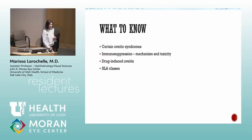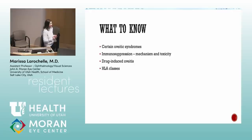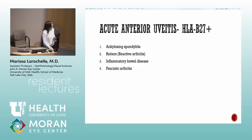Immunosuppression toxicity — for example, methotrexate — comes up every year on testing. Drug-induced uveitis is also tested. For anterior uveitis, HLA-B27 immediately comes to mind with ankylosing spondylitis, but there are four syndromes associated with uveitis and HLA-B27.